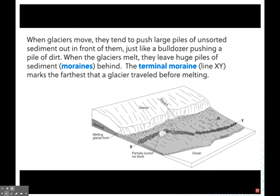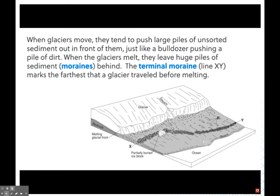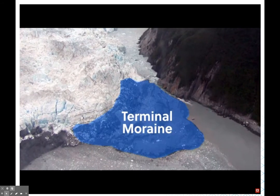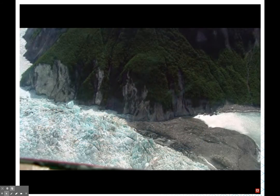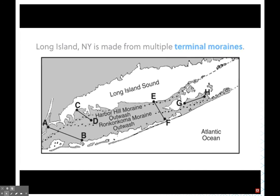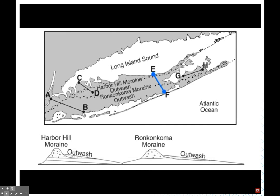Moraines reveal a lot about a glacier — particularly the terminal moraine, shown as line XY in the diagram, which marks the farthest point a glacier traveled before it receded. Long Island, New York is a great example: it was formed by multiple periods of glaciation and therefore has multiple terminal moraines — the Harbor Hill moraine, the Ronkonkoma moraine, and others. Looking at line EF as a profile, you see the first moraine, then outwash from melting water, then a second moraine from a later glaciation.